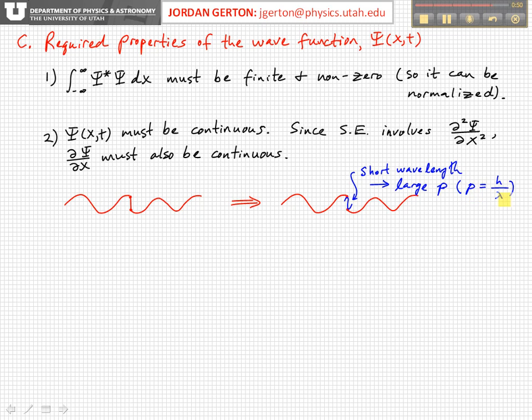By de Broglie's relationship, a very small wavelength leads to a very large momentum and therefore a very large mechanical energy. In the limit that this wavelength goes to zero - that is, we have a real discontinuity in the slope - the momentum would be infinite, and therefore the energy would be infinite. That's not physical, so that's another way to look at this requirement that the wave function and its derivative be continuous.